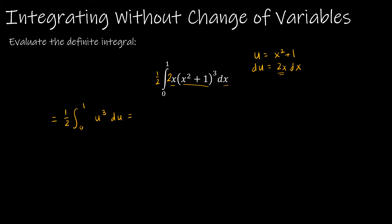So from here, I would take the 1 half on the outside. u to the third would be u to the fourth over 4. And then, again, from 0 to 1.